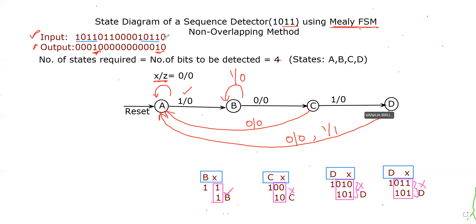After identifying the sequence of bits in the given input data, we should write the output. The output should be one only after completion of detection of four bits. At the last position of the group, the output should be one. The remaining all bits in the output sequence should be zero. This is the functioning of the sequence detector.